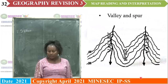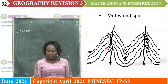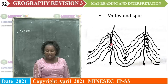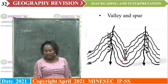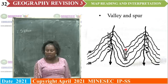A valley and a spur. A valley is represented by V-shaped contours whose values are decreasing inwards — 500, 400, 300, 200 — that's the height of the land. A spur has values increasing upwards — 200, then 500. If we draw a cross section, it gives us a hill between two values. The hill between two values is a spur.